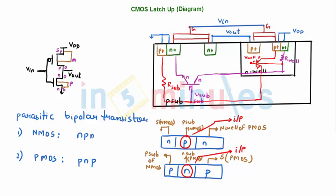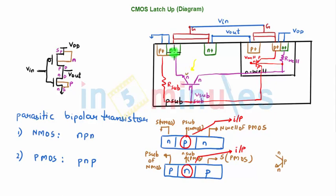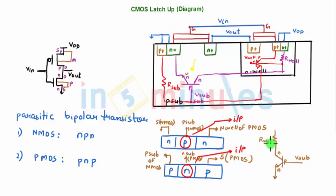Let's magnify the NPN transistor. I'm going to draw N-P-N below. The first N is connected towards the source of NMOS, which is connected to ground. The P goes to V-sub. The other N goes through R-well to a point we'll address next.